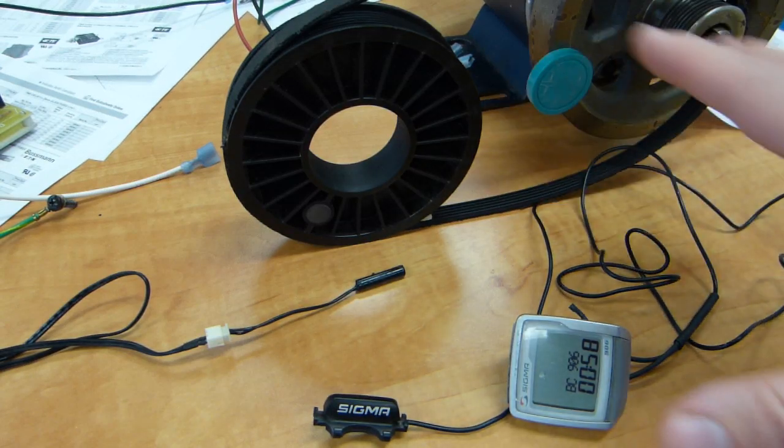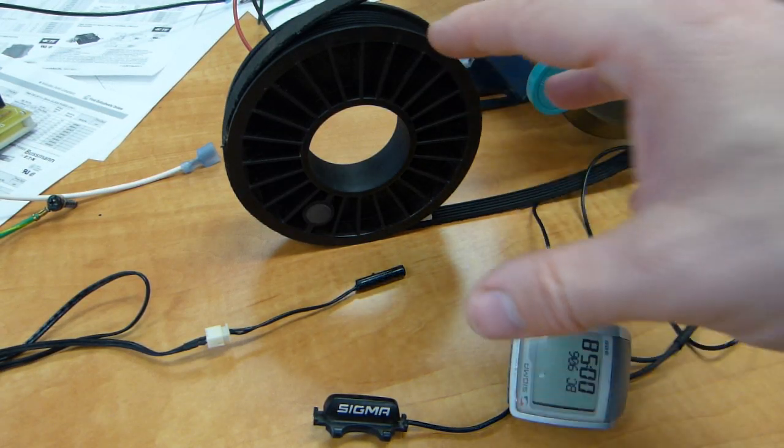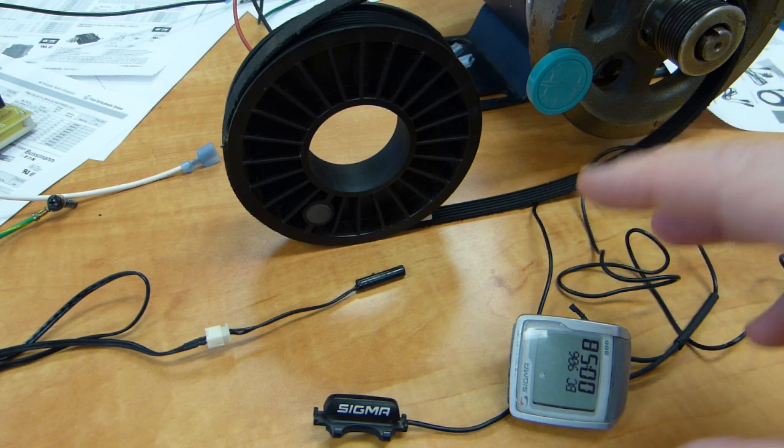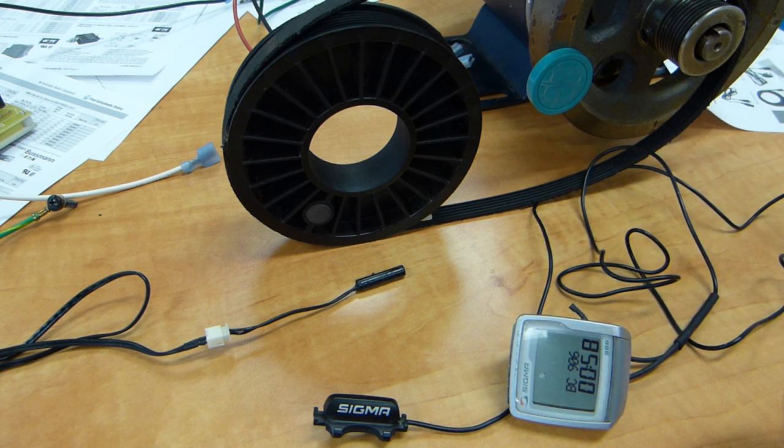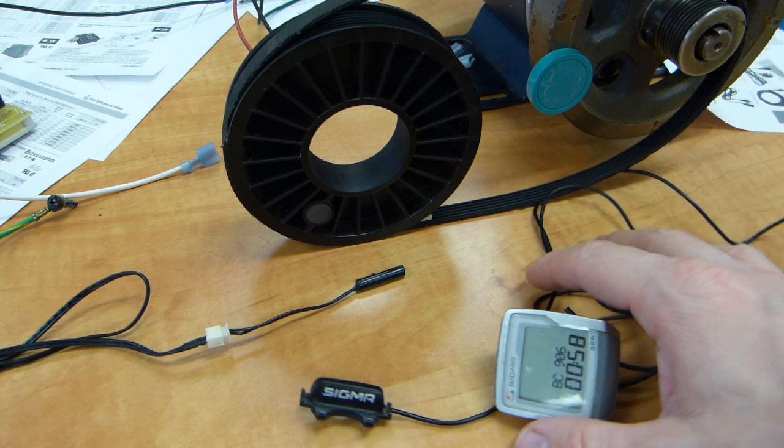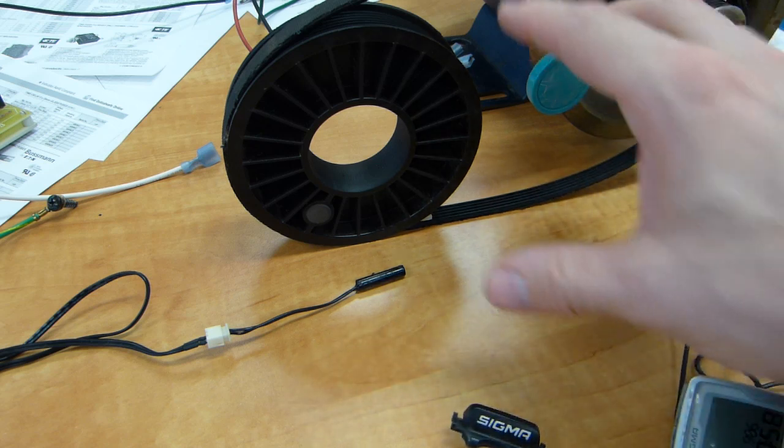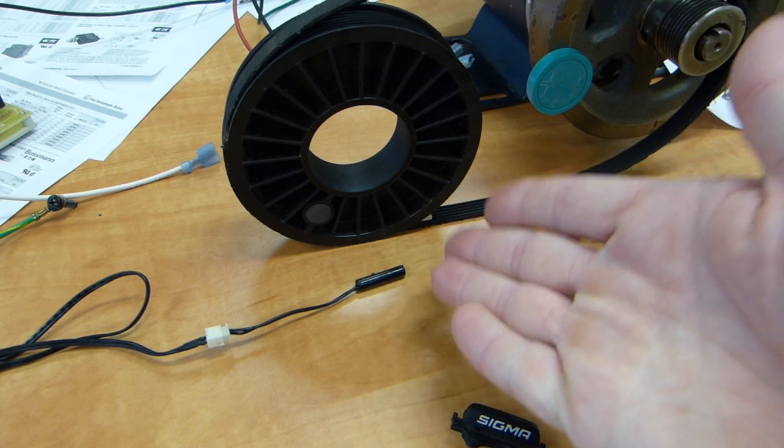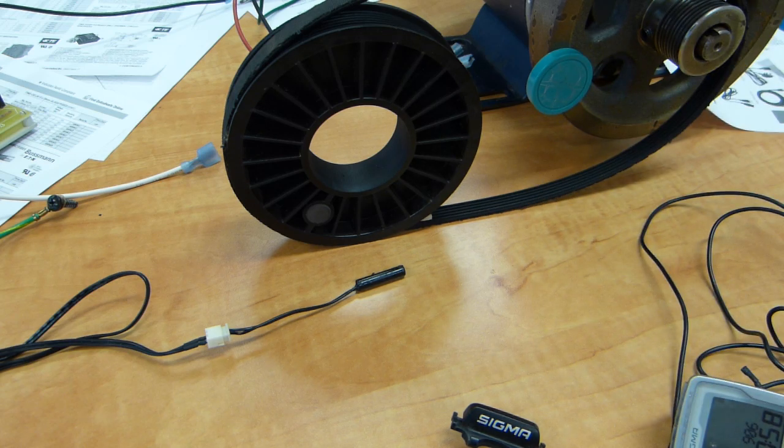For this discussion in sensing and automation I have two examples of technology that work essentially the same way. In the foreground here is a bicycle speedometer and in the background there is a proximity sensor from an industrial application.